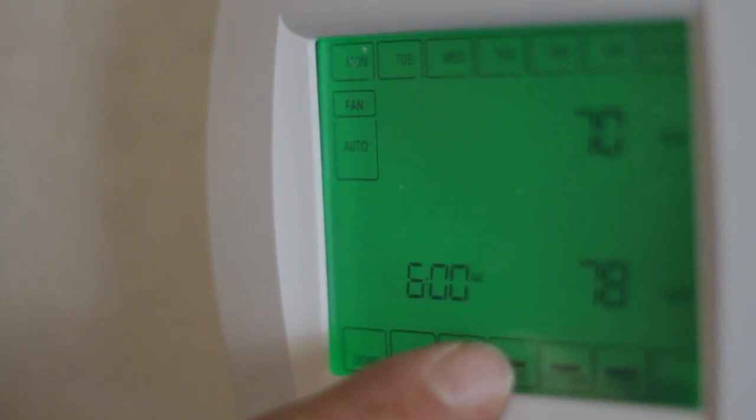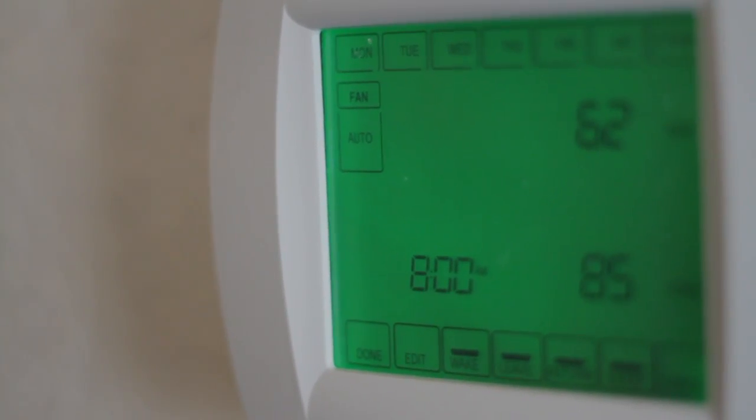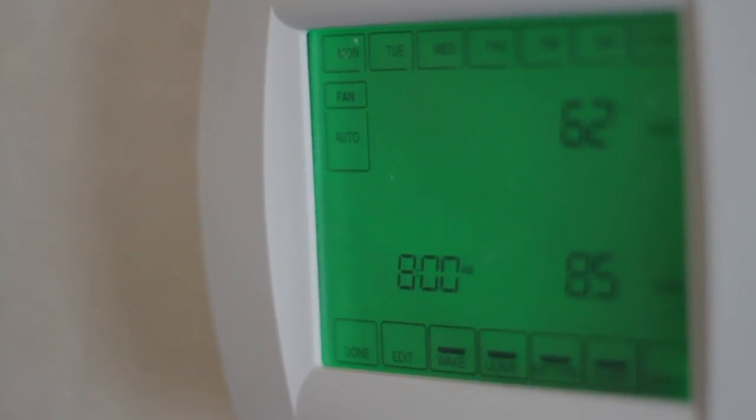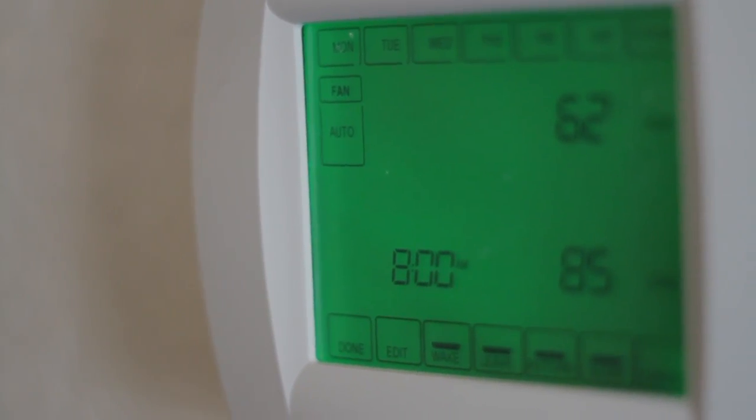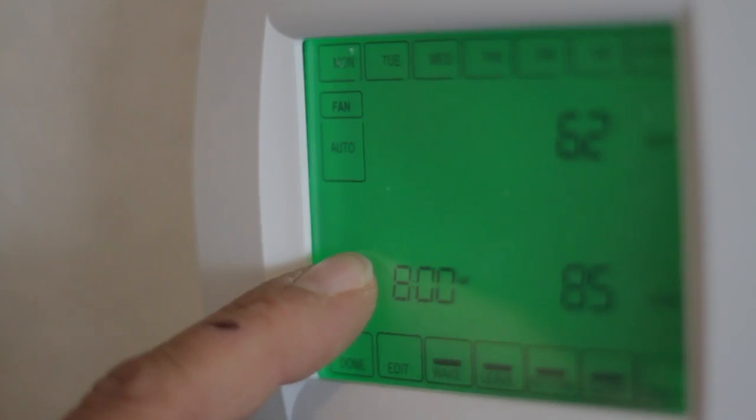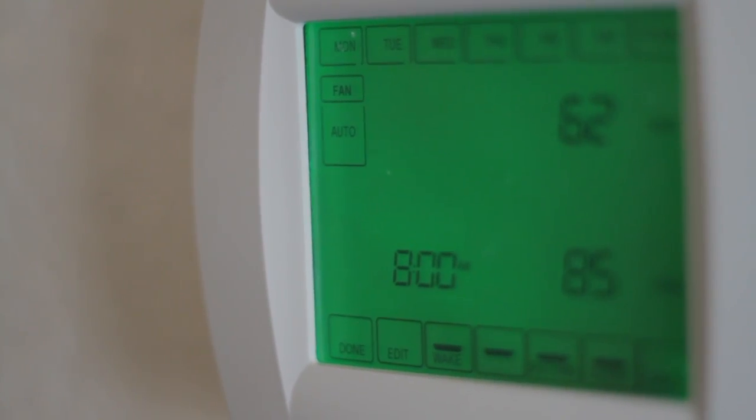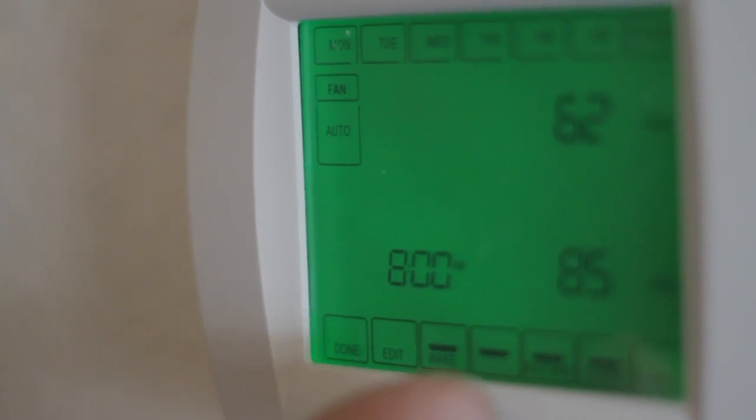Then you'll want to hit the next program setting, which is going to be leave. What they represent that as is basically what time you would leave to go to work. When you go to work, obviously most people want to turn it down a little bit. This one's set at 8 a.m. to go down to 62 degrees instead of having it run all day when you're not there.